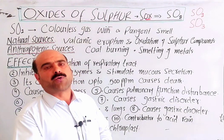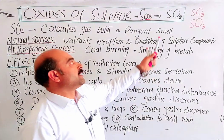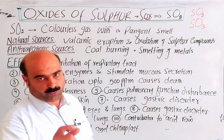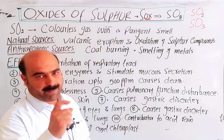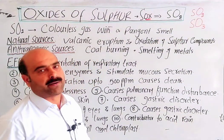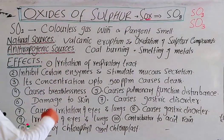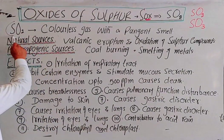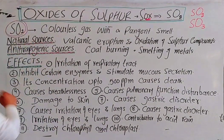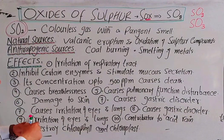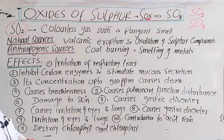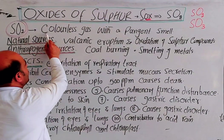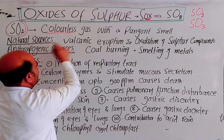Here we are going to discuss Sulphur Dioxide, which is one of the important oxides of Sulphur. The main physical properties of Sulphur Dioxide are: Sulphur Dioxide is a colorless gas with a pungent smell. It causes irritation of the nasal cavity, nose, and throat.